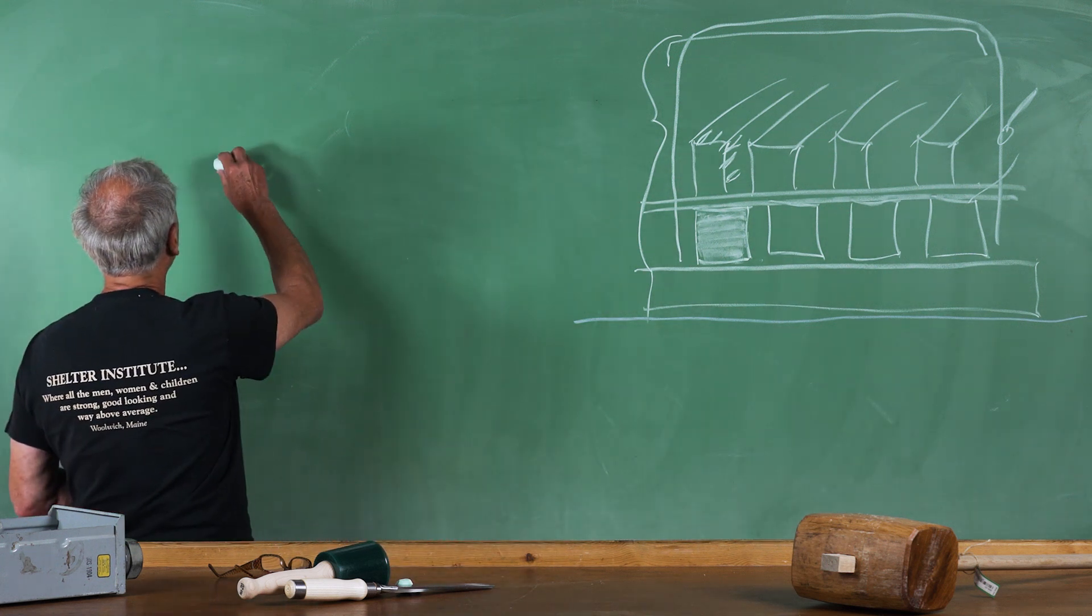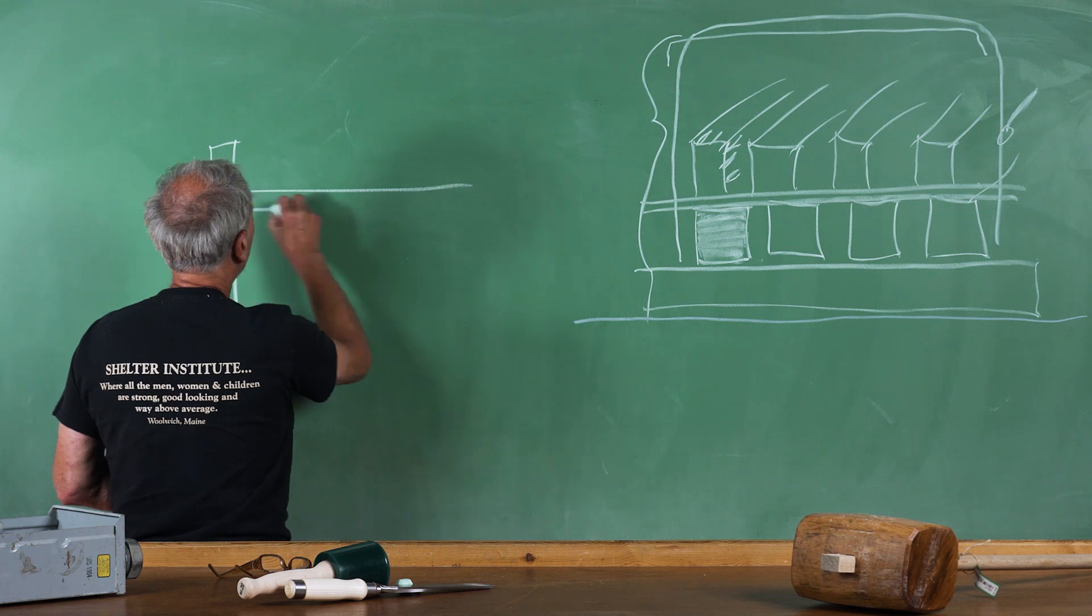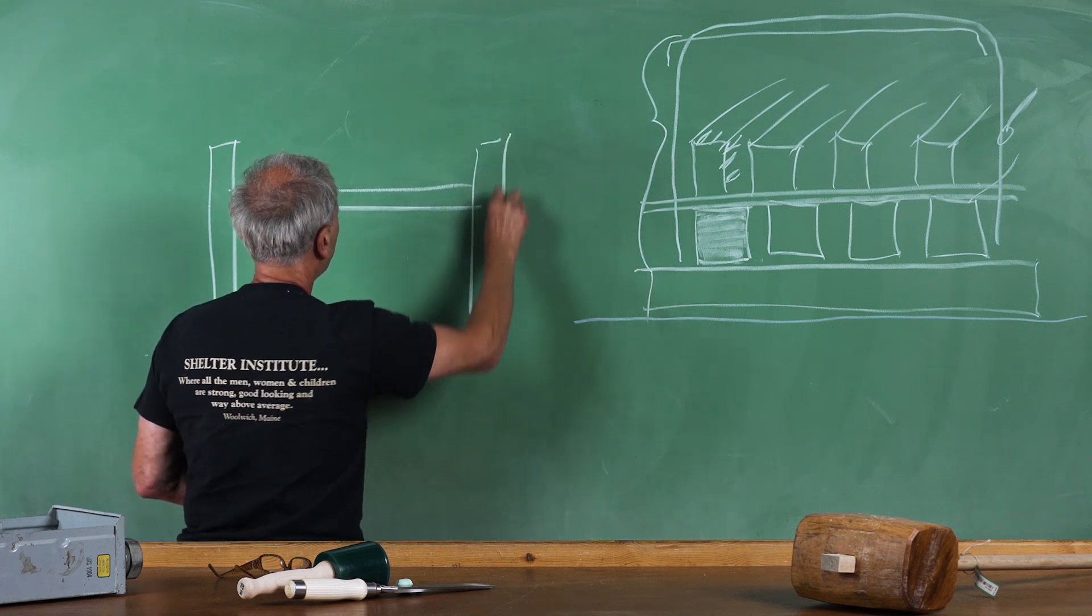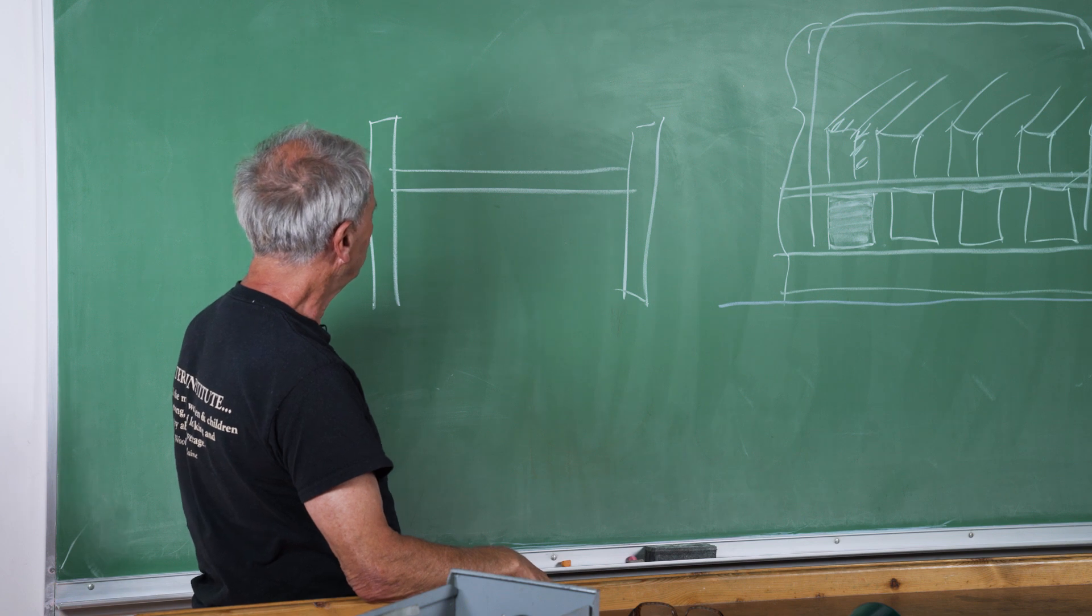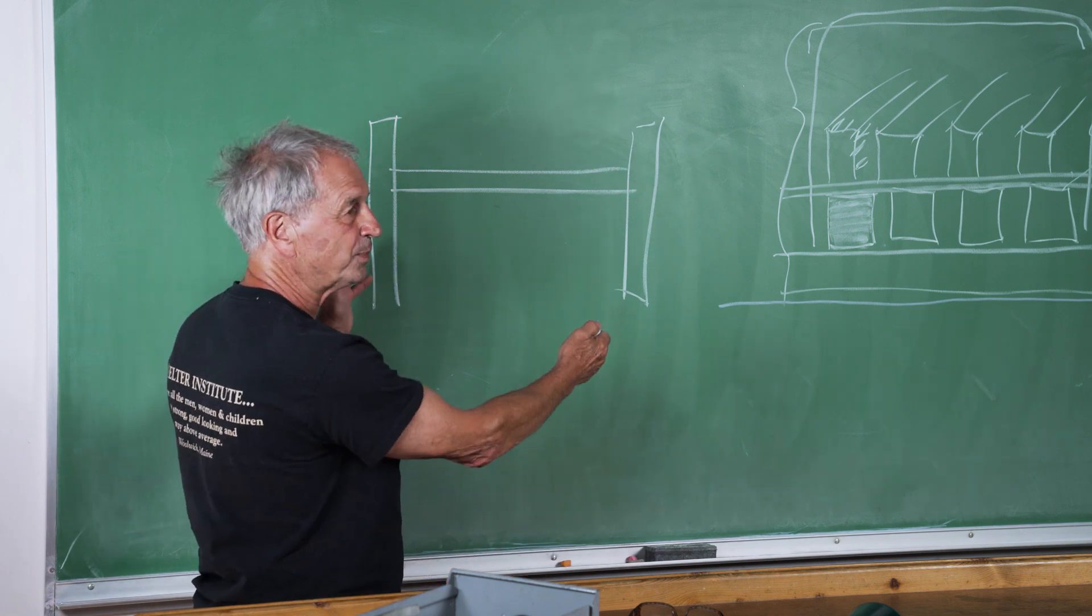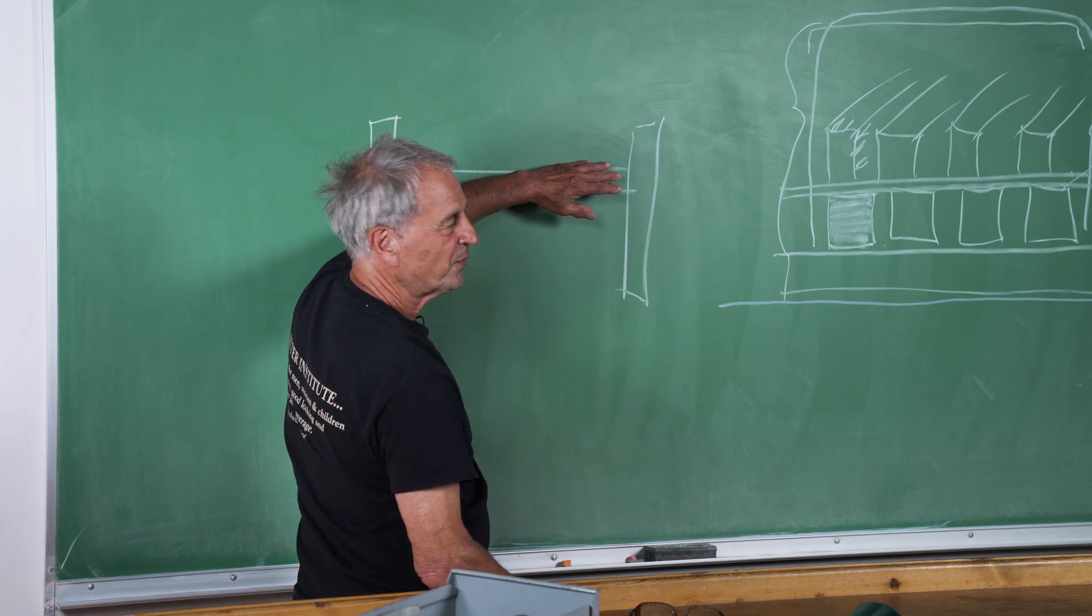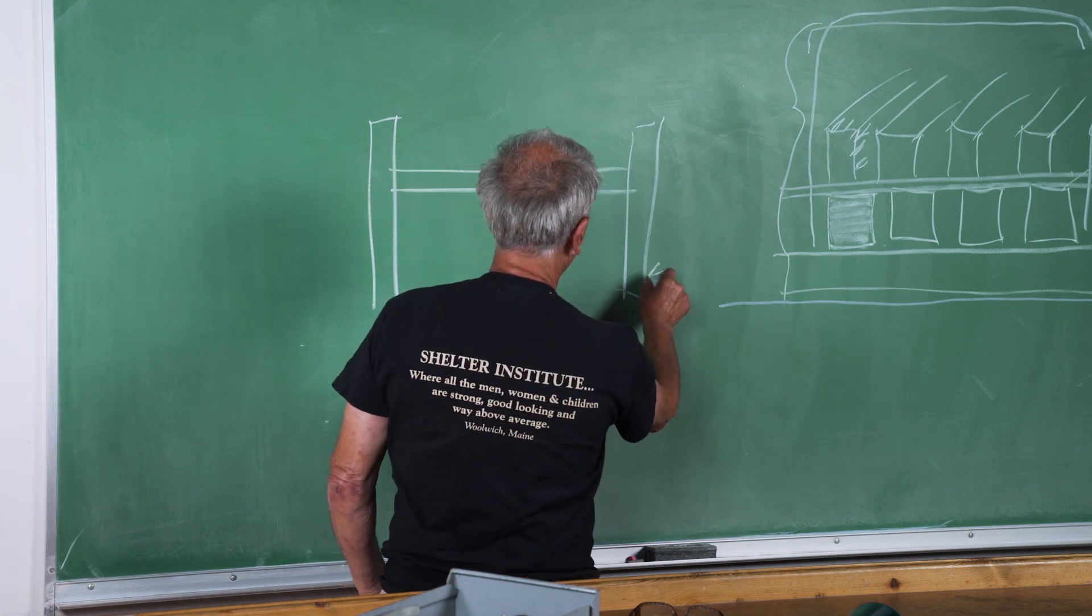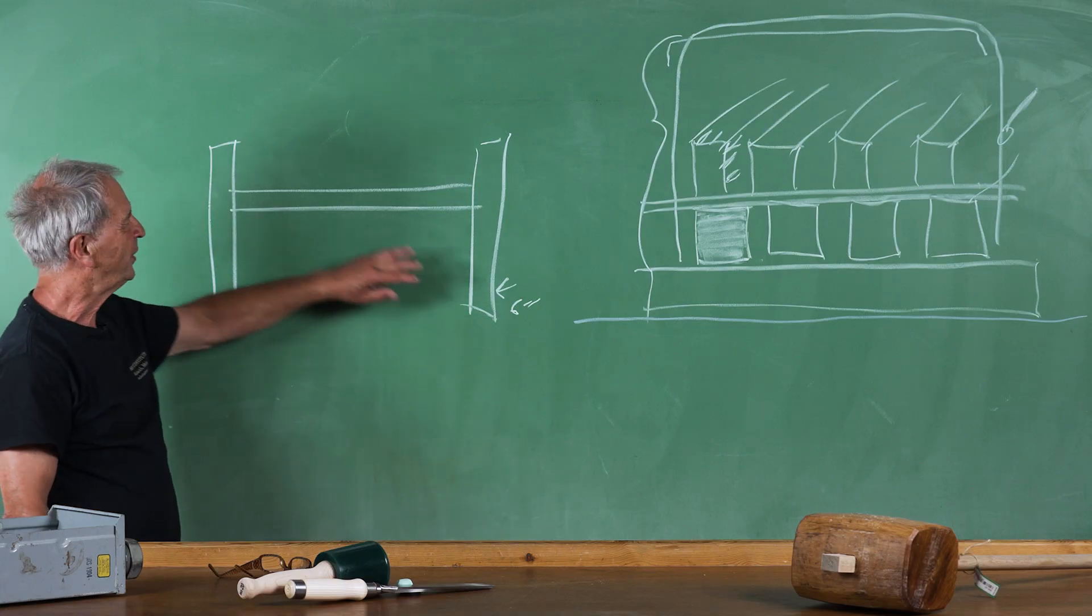For instance, let's say that you had a post, a beam, and a post, and you had this all cut out two years ago. Now you're putting them together and it turns out that this beam here is slightly twisted so that this post is six inches up in the air at this end because of this twist.